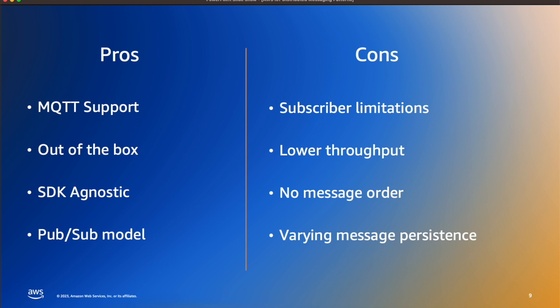Some cons: there are subscriber limitations — the number of subscribers that can exist in a shared namespace has a limit. It is lower throughput, with constraints on the number of messages that can flow per account per second. There's no guaranteed message order since this is MQTT, so FIFO or LIFO queuing won't work here. There's also varying message persistence — the time a message exists in IoT Core — something to be aware of when trying to use it as a queuing mechanism.